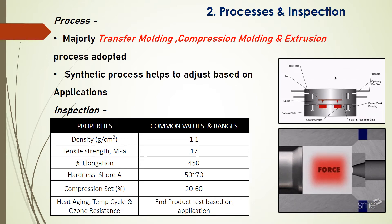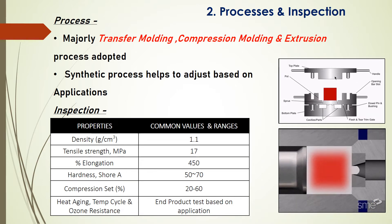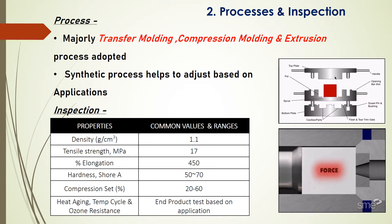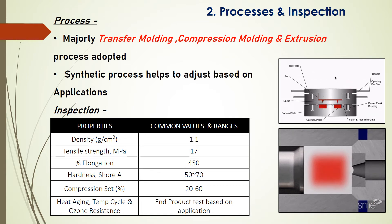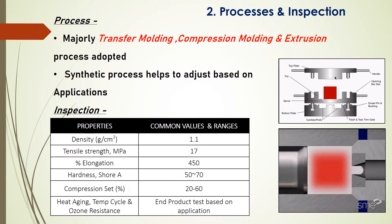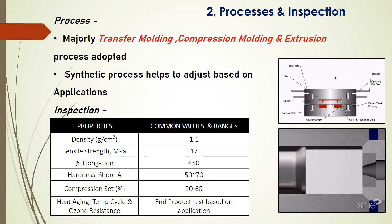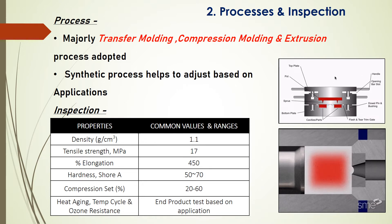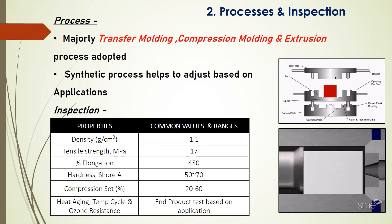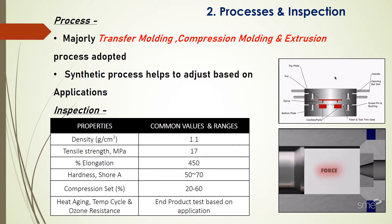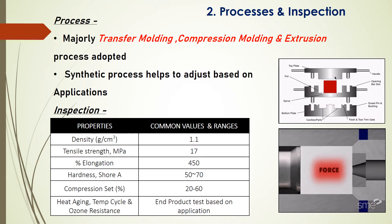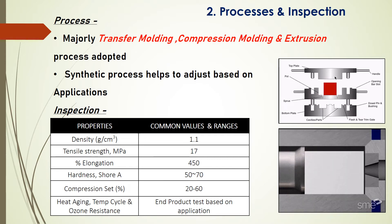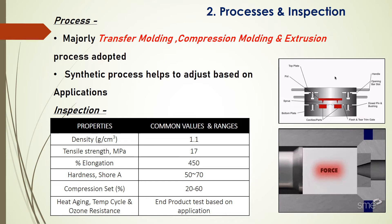As it is a synthetic material, and based on the application, the properties can be adjusted. For inspection, you can find multiple properties. Density is 1.1, tensile strength is 17 MPa, elongation percentage is 450, shore hardness varies from 50 to 70, and compression set is 20 to 60 percentage. The final product goes through multiple testings: heat aging, temperature cycle, and ozone resistance.